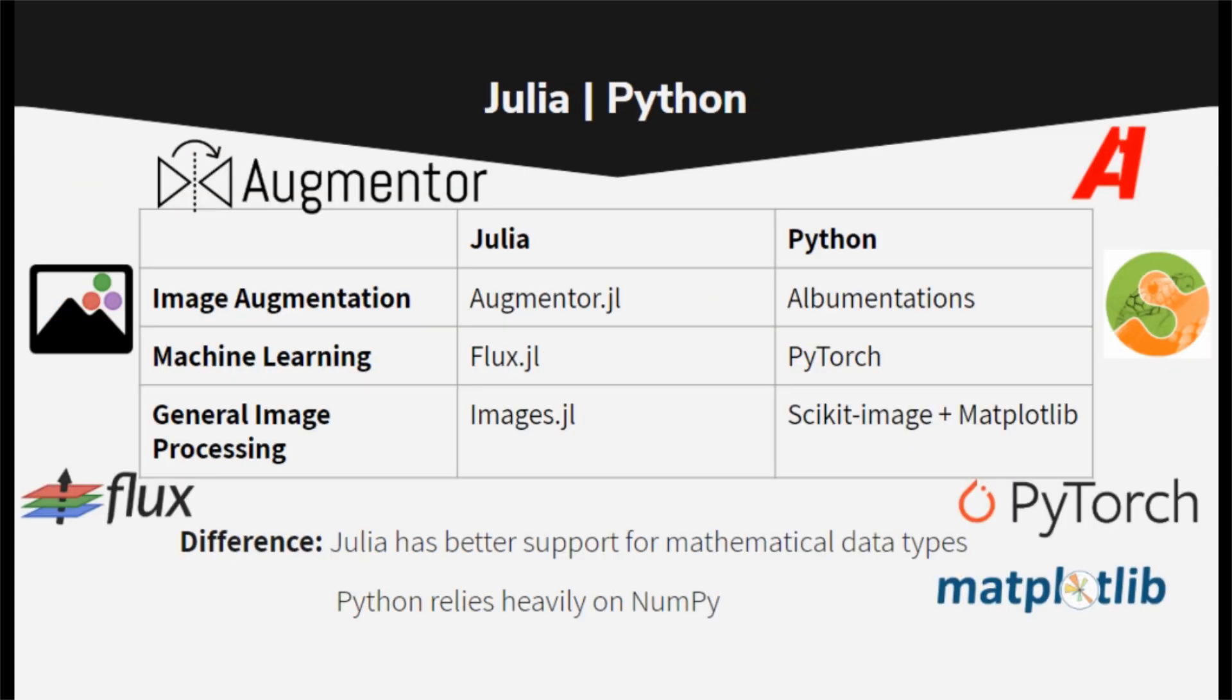I implemented this project in both Julia and Python, and here's a comparison of how it went. For image augmentation, in Python I used Albumentations. In Julia, I used Augmentor.jl.